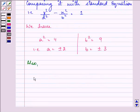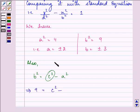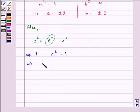Also, we know the relation that b² = c² - a². So with the help of this relation, we can find out the value of c². b² is found out to be 9, so 9 = c² - 4, that implies we have 13 = c², that further implies that the value of c is ±√13.